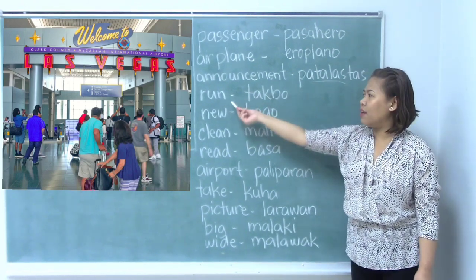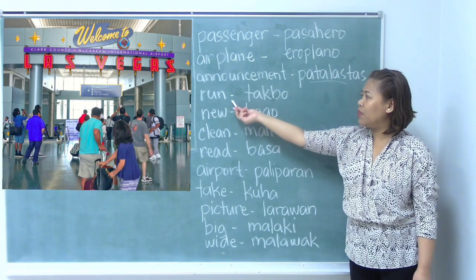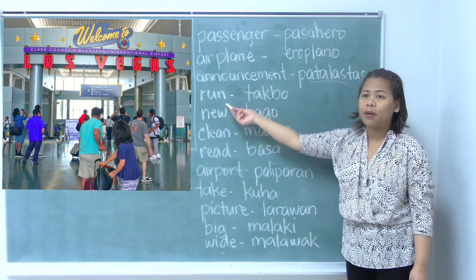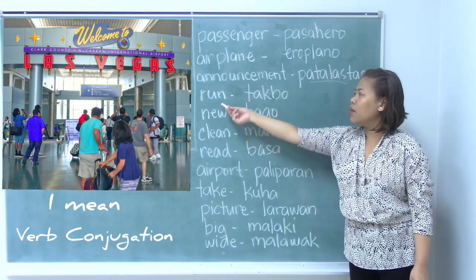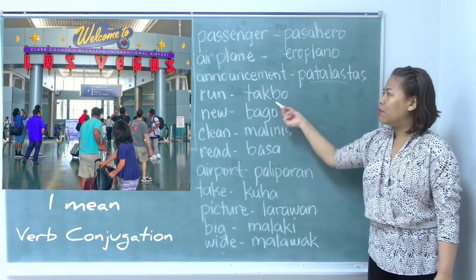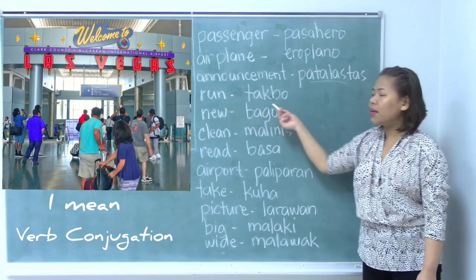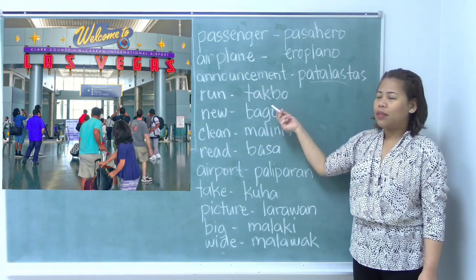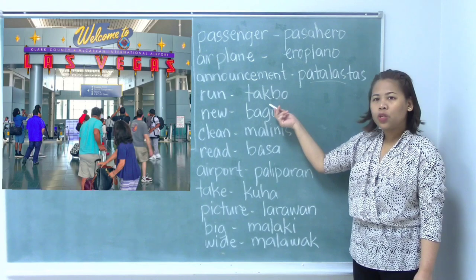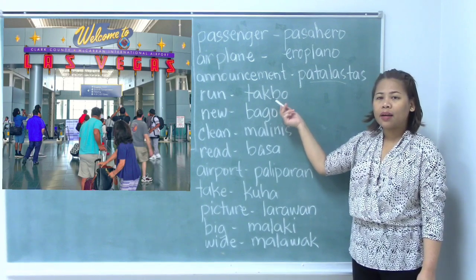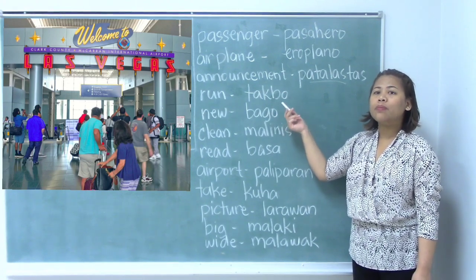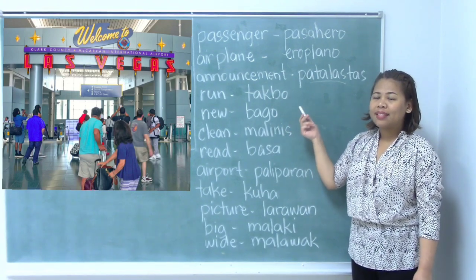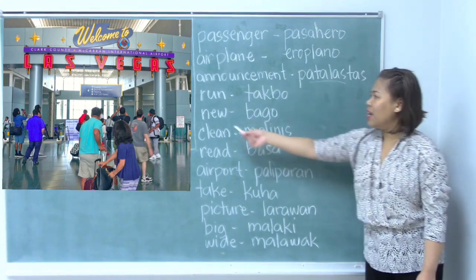Run — I think I gave this in my previous lesson when we were discussing about verb conjugation. So, run is takbo. And then we are going to conjugate them. Future: tatakbo. Present: tumatakbo. Past: tatakbo.